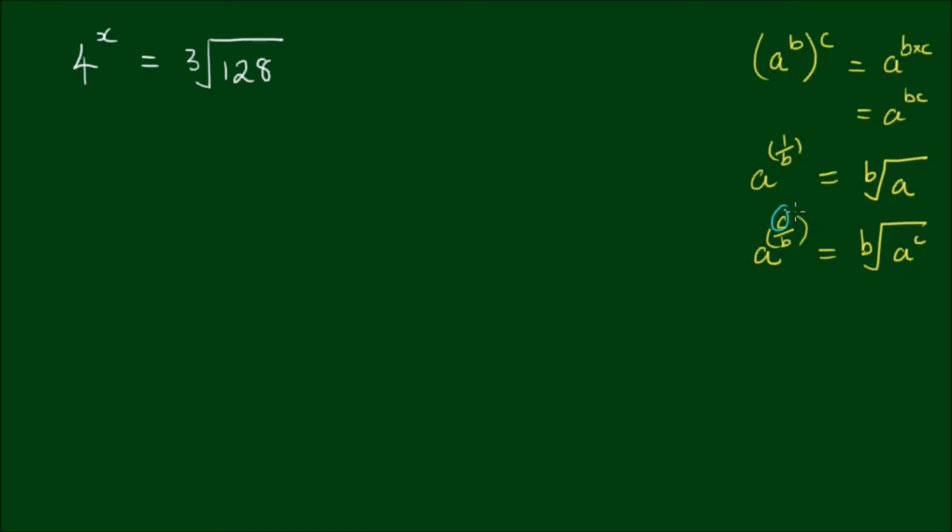We can write this as the b root of a to the power of c. So here the c goes inside of the root, and the b is written outside of the root.